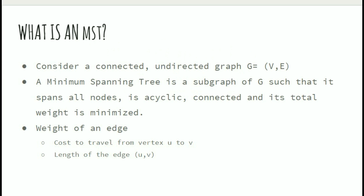What is a Minimum Spanning Tree? Let us consider a connected, undirected graph G with V vertices and E edges. A Minimum Spanning Tree is a subgraph of G such that it spans all the nodes, is acyclic, connected, and its total weight is minimized. The weight assigned to each edge can be either the cost of traveling from one node to another or the length of the edge.